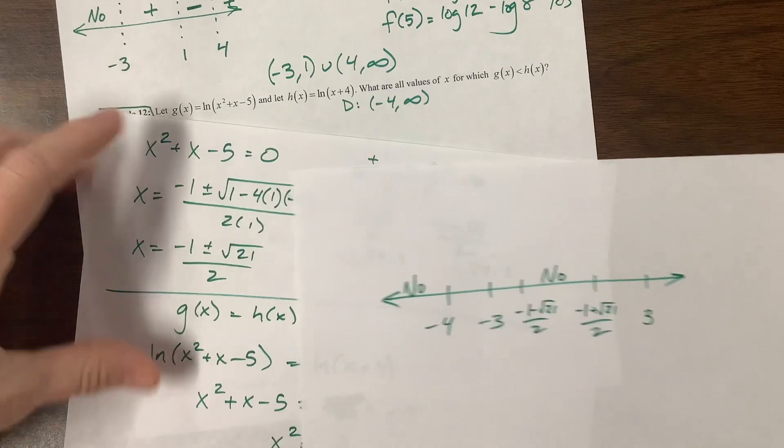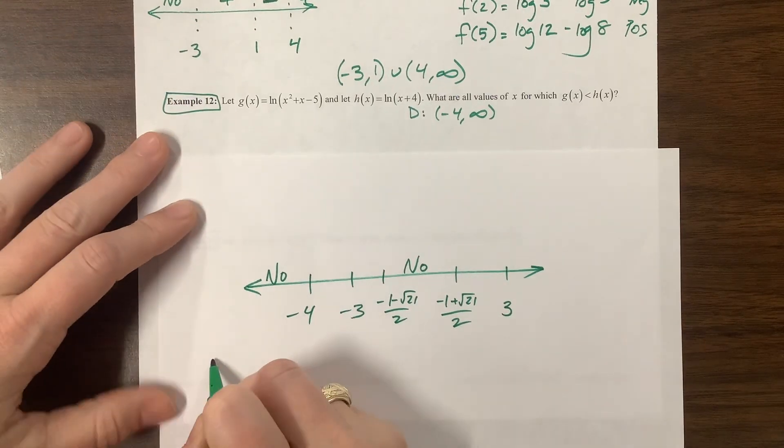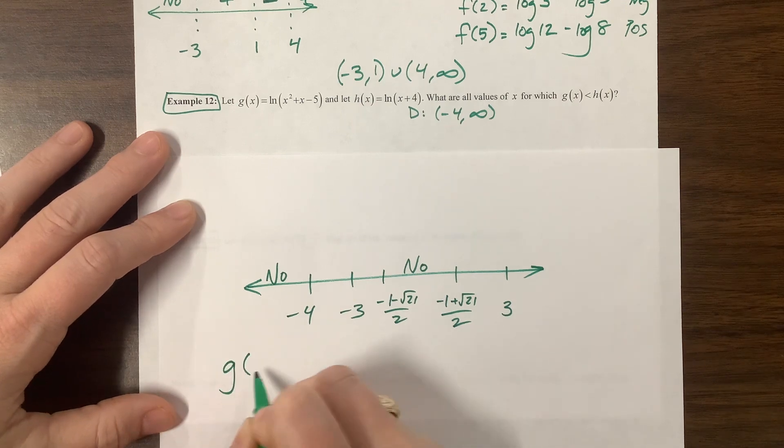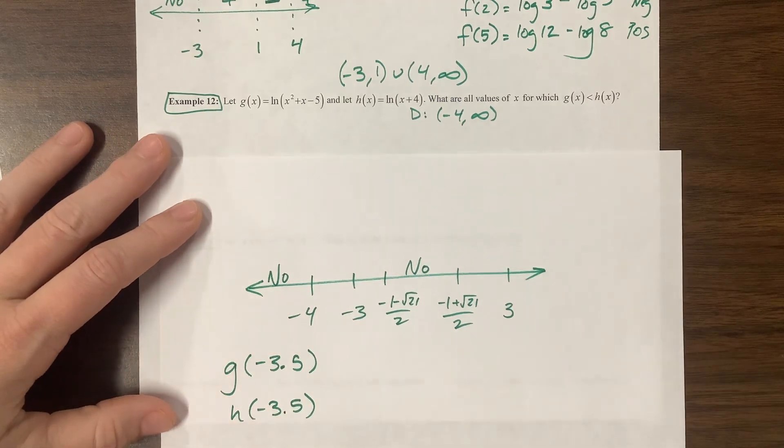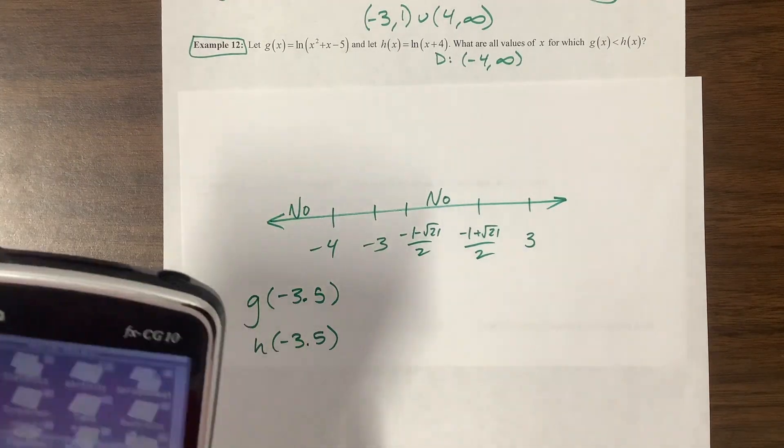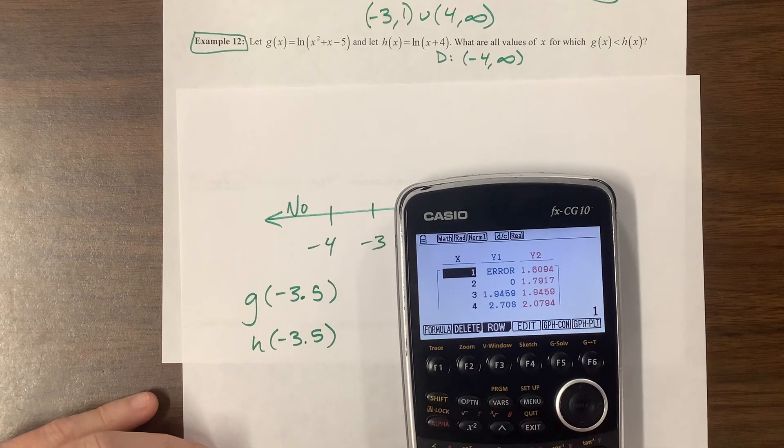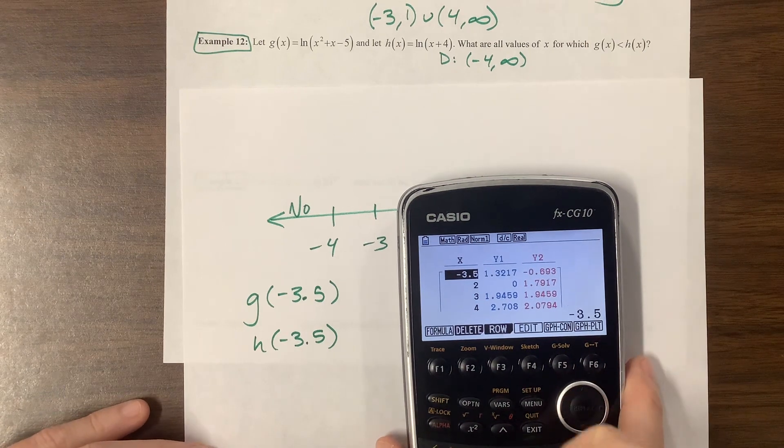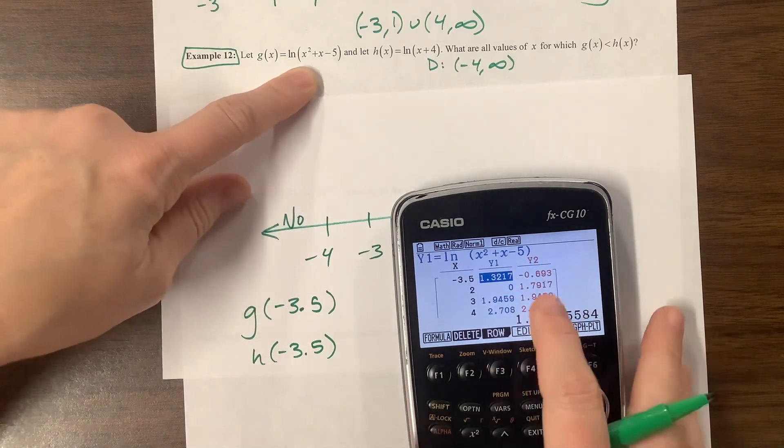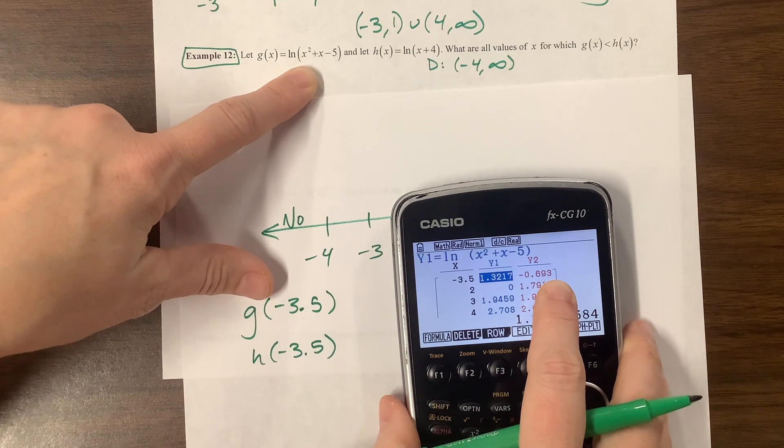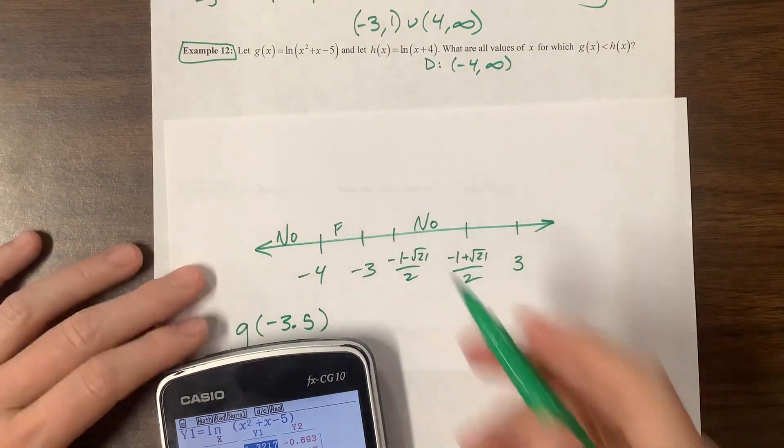Now we need to see what's happening. Where is G less than H? What's between here and here? So G of negative 3.5, and we're going to compare G and then H of negative 3.5. We're going to utilize our technology. I have my two equations already in, I'm coming to my table. I'm going to type in negative 3.5. The first one was G. G is going to be bigger. So here at 3.5, G is bigger than H. So we wanted G is less than H, so this is false.